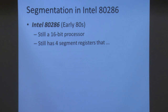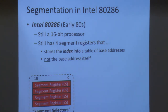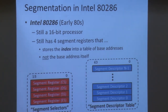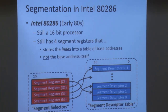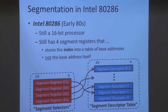Now let's look at the Intel 286, a follow-up to the 8086 released in the early 80s. It's still a 16-bit processor with four segment registers. However, the key difference is that the segment registers do not store the base address themselves — instead they store an index into a table that stores the base addresses. These are now called segment selectors. Depending on the value stored in these registers, the machine indexes into a segment descriptor table, which is an array of segment descriptors, and these segment descriptors contain the base address information.